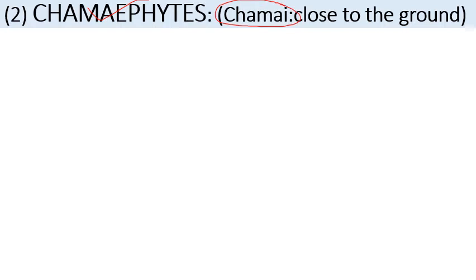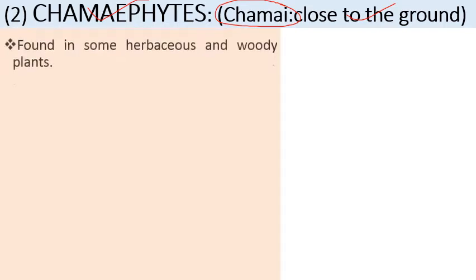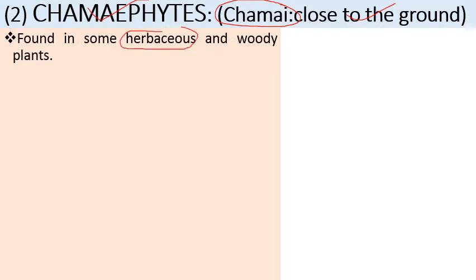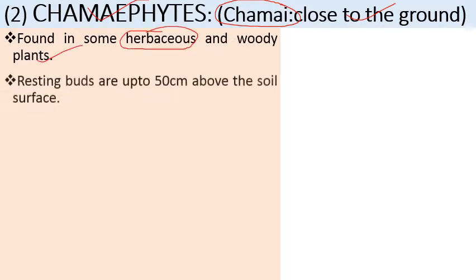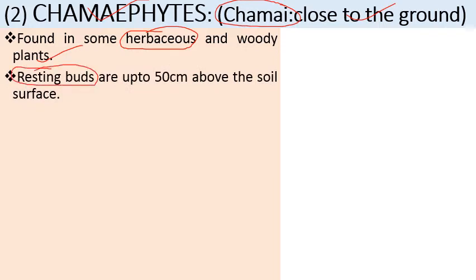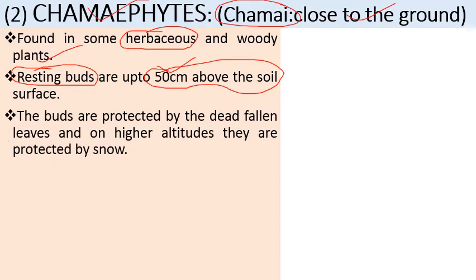The next category of life forms is Chamaephytes. The name comes from 'chamae,' meaning close to ground. Their perennating structures are present up to a height of 50 centimeters from the soil surface. These buds are protected by dead fallen leaves, and at higher altitudes they are protected by snow.